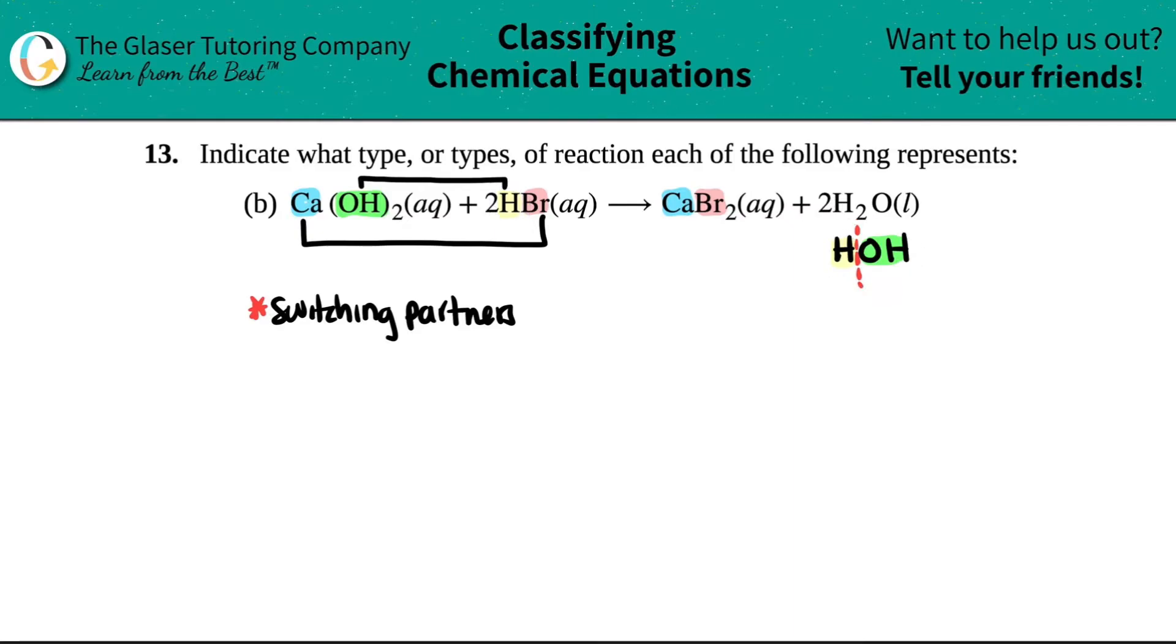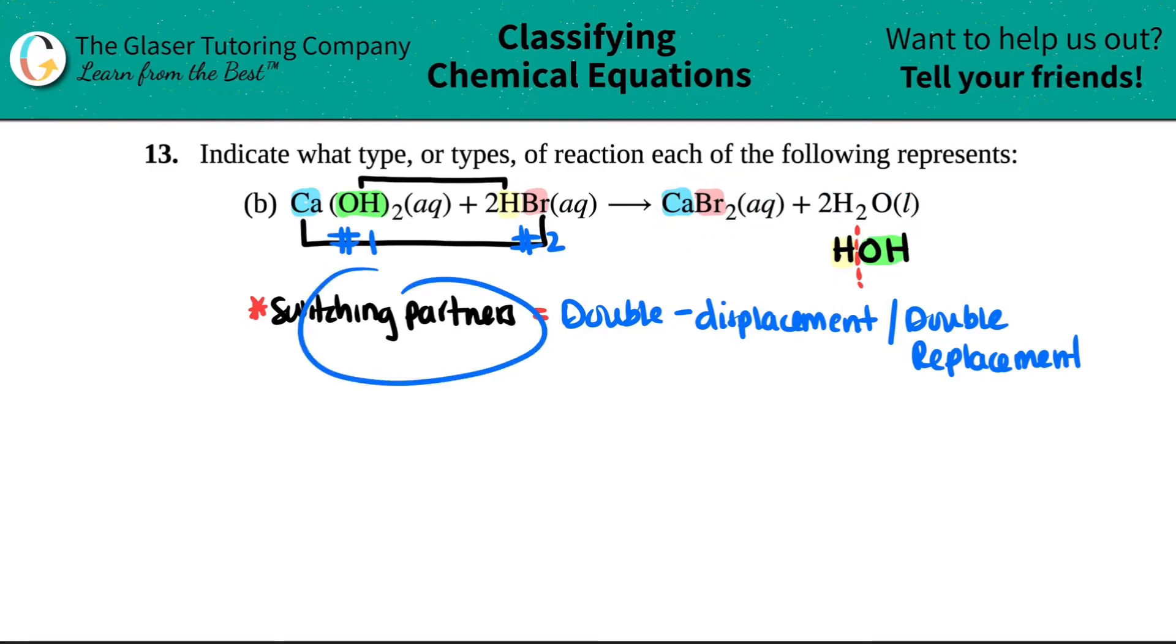Whenever you're switching compounds or switching partners, this is always a double displacement. Some teachers or professors call this type of reaction double displacement; some call it double replacement. I would just match whichever one your teacher or professor talks about. But if you see this idea of switching partners, especially if you have compound number one with compound number two, and then you have two compounds at the end, it's switching partners—double replacement or double displacement.